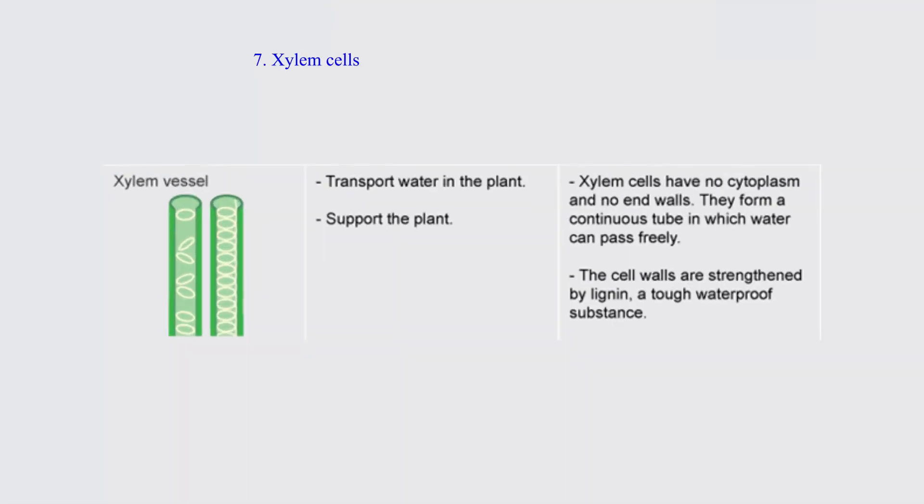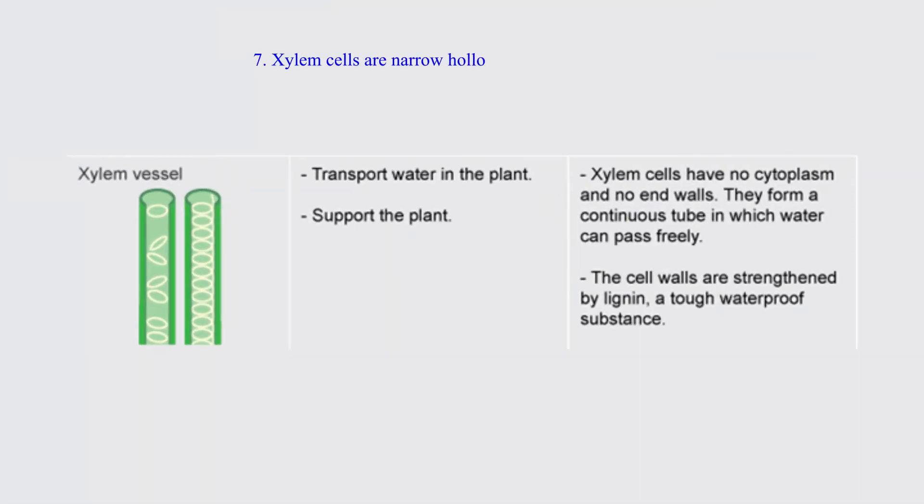Seven, xylem cells are narrow hollow tubes and are lignified.